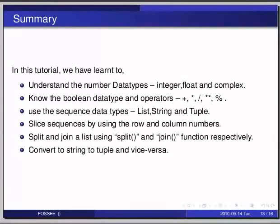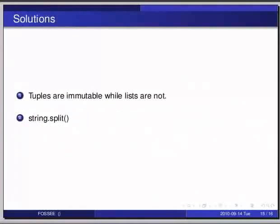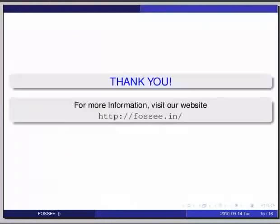Here are some self-assessment questions for you to solve. First: what is the major difference between tuples and lists? Second: split the string 'split the string on white spaces' on white spaces. The answer to the first: the major difference between tuples and lists is that tuples are immutable while lists are not. For the second: to split the string on white spaces we use the split function without an argument — that is 'string.split()'.